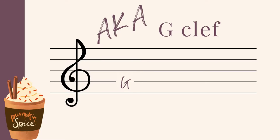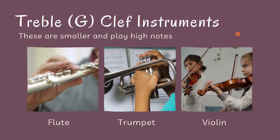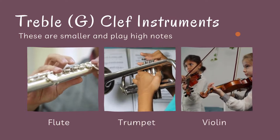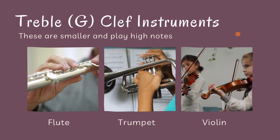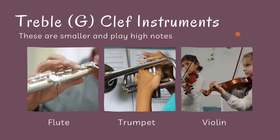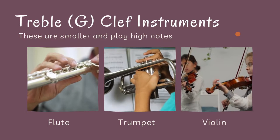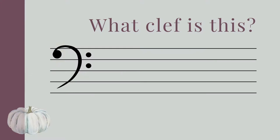It's also known as the G clef. Examples of instruments that play in the treble clef are smaller and play high notes, like the flute, the trumpet, and the violin.